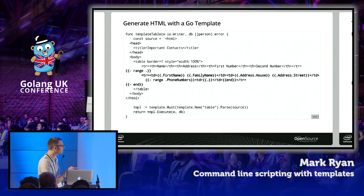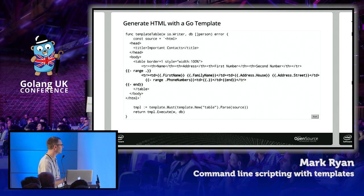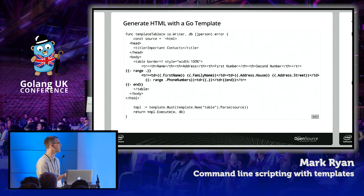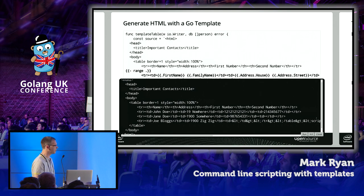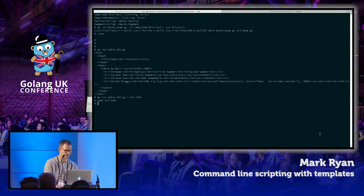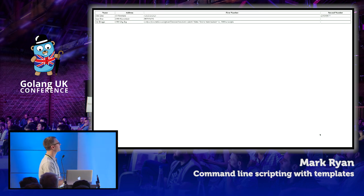This is just a simple loop creating a new HTML table row on each iteration. At the bottom of the function we have two commands: the first creates a new template object by parsing the document, and then we execute it, giving it a writer for output and a Go variable — db, which is a slice of persons. Running this produces a similar document with less code. And rather than having a nasty injection attack pop up, the attack has been escaped. This is much more secure.